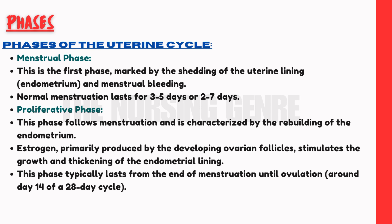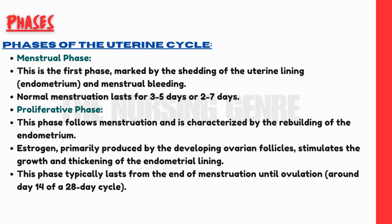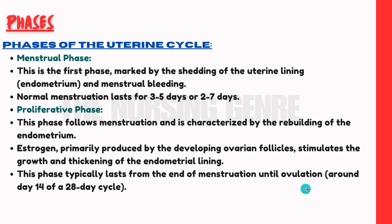Next is the proliferative phase. This phase follows menstruation and is characterized by the rebuilding of the endometrium. Estrogen is primarily produced by the developing ovarian follicles and stimulates the growth and thickening of the endometrial lining. In the uterine cycle, the estrogen hormone thickens the endometrial layer. This phase typically lasts from the end of menstruation until ovulation.